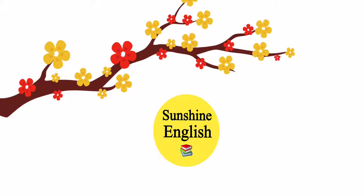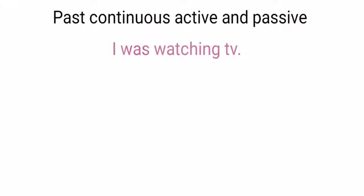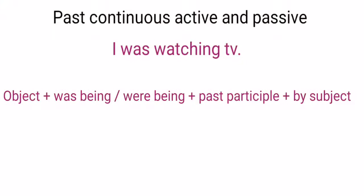Welcome to Sunshine English. Present Continuous Active and Passive. Look at this affirmative sentence — this is active voice: 'I was watching TV.' In an active voice sentence, we use subject plus verb plus object. Now let's convert this sentence into passive voice. Here's the structure: object plus 'was being' or 'were being' plus past participle plus 'by' subject.